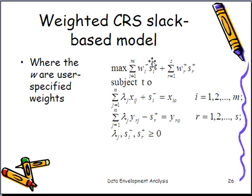Again, this is only a CRS model because you don't have a constraint on sum of the lambda j's. If you add constraints on the sum of the lambda j's equal to 1, then you get a different slack-based model. For example, if you add the sum of lambda j is equal to 1, then you get a weighted VRS slack-based model.